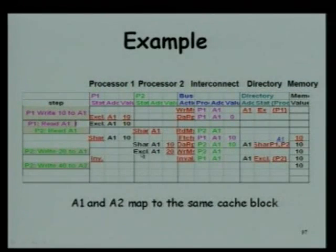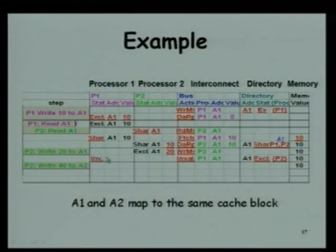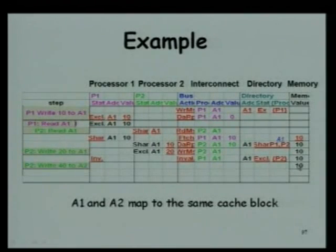What if P2 writes 20 to A1? A write miss is generated, the state is changed to exclusive, and 20 is written. Invalidation is sent to P1, which converts its state to invalid. The directory sharer set changes to P2. The value 20 is not updated in memory yet since P2 is holding it exclusively dirty.